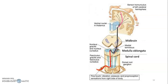When asked to describe the medial lemniscal pathway, give detail about all three neurons. The cell body of the first-order neuron is in the dorsal root ganglia. The cell body of the second-order neuron is in nucleus gracilis and cuneatus of the medulla. The cell body of the third-order neuron is at the ventral posterior nucleus of the thalamus.